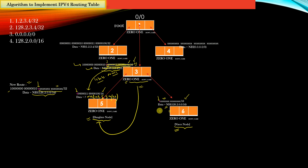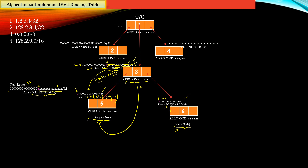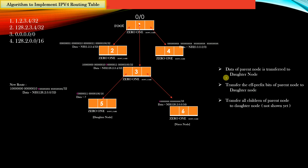You can rewind this video and go through the explanation again to understand it better. We will insert a few more routes into this tree and discuss the node split algorithm a few more times. The following points need to be highlighted: the data of the parent node is transferred to the daughter node; the effective prefix bits of the parent node are transferred to the daughter node; and all children of the parent node are transferred to the daughter node. The daughter node is notorious in the sense that it takes away all the possessions of its parent node which is undergoing a split.